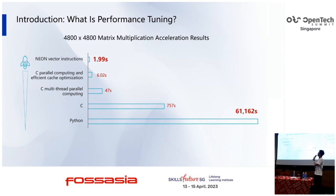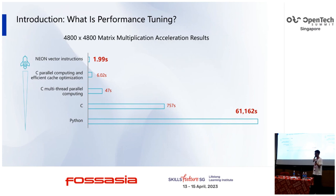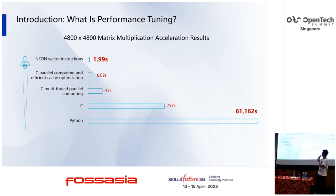First, I want to introduce what performance tuning is. This is a simple example for a matrix of 4,800 by 4,800. If we write it in Python language, it will take more than 60,000 seconds to run. However, if we use C language to write it, it only takes about 600 seconds to run. Then, if we optimize by multi-thread parallel computing, we can take about 47 seconds.